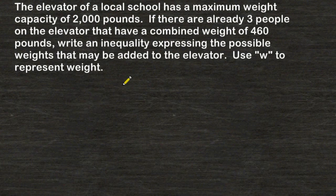The elevator of a local school has a maximum weight capacity of 2,000 pounds. If there are already three people on the elevator that have a combined weight of 460 pounds, write an inequality expressing the possible weights that may be added to the elevator. Use W to represent the weight.